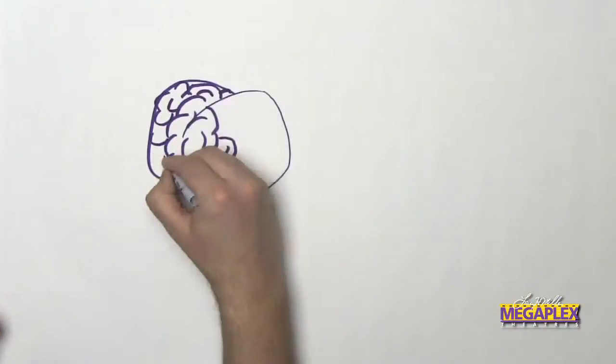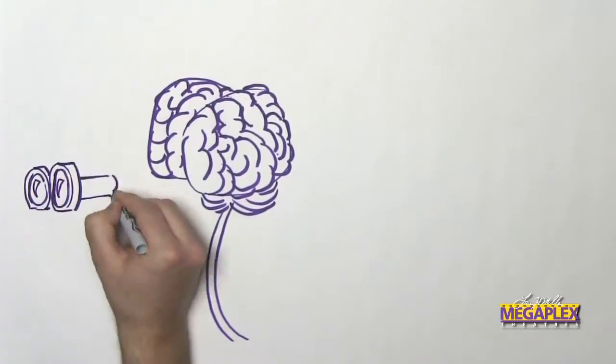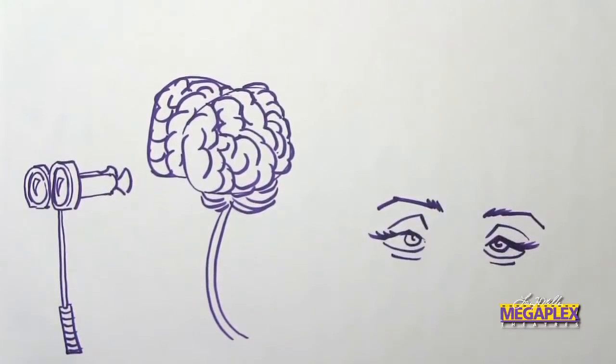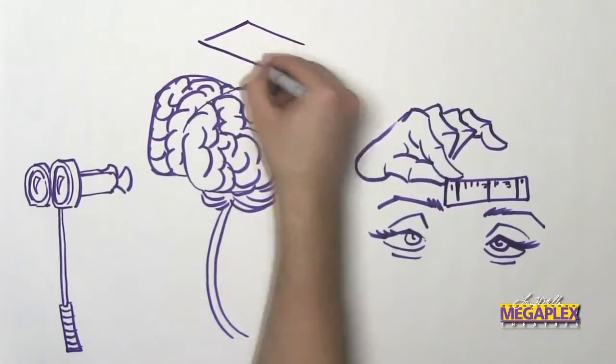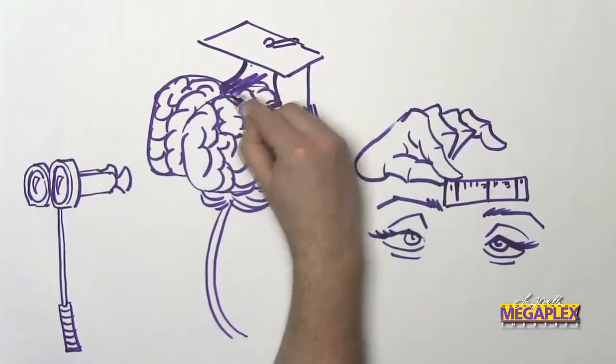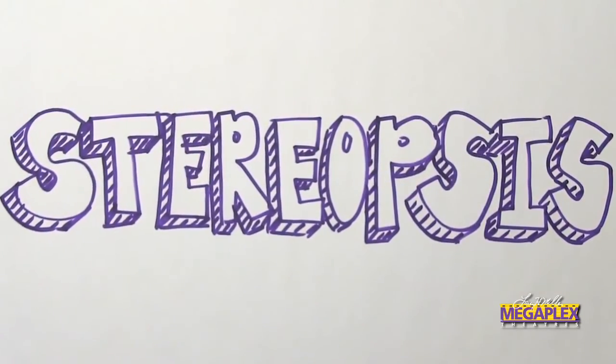First, how do you see three dimensions in the real world? Your brain sees depth because you have binocular vision. Human eyes are spaced about three inches apart, which causes us to see two slightly different perspectives at the same time. Your brain, being pretty smart, hooks these views together. It's called stereopsis.